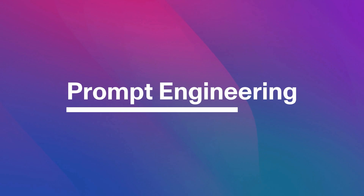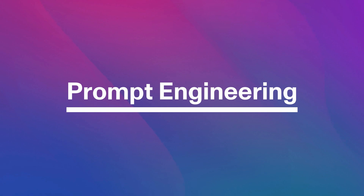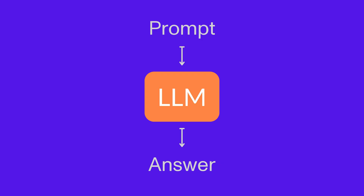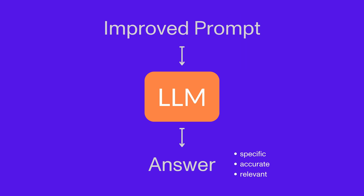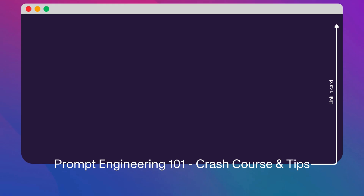Prompt engineering involves the strategic design and formulation of input queries or instructions given to generative AI models. The goal is to get specific, accurate, and contextually relevant responses from the model by framing the input in a way that influences its understanding and generation. If you'd like to get better at prompt engineering, you can watch this video.